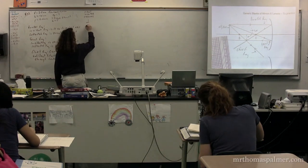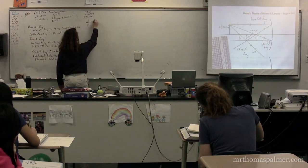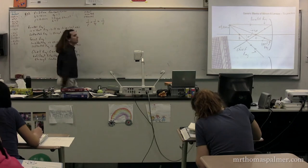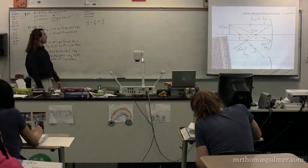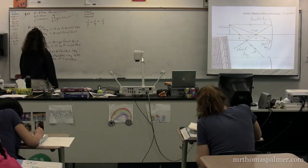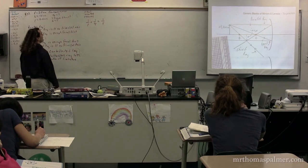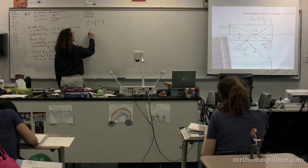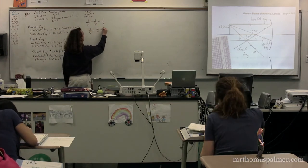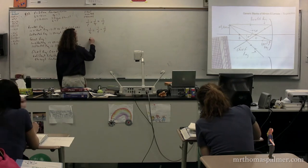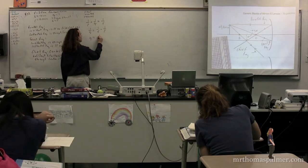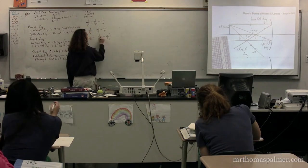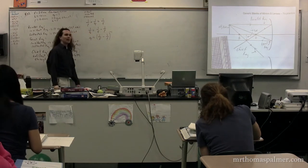We have 1 over the object distance plus 1 over the image distance equals 1 over the focal length. We're looking for the image distance, so we'll solve for it: 1 over the image distance equals 1 over the focal length minus 1 over the object distance. So the image distance equals 1 over the focal length minus 1 over the object distance, all to the negative 1 power.